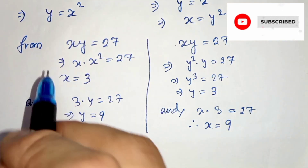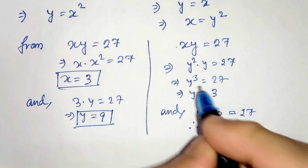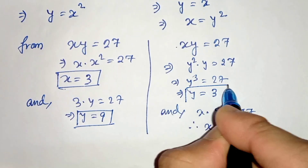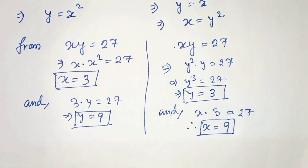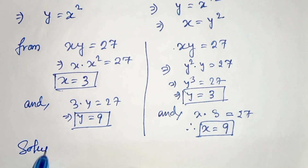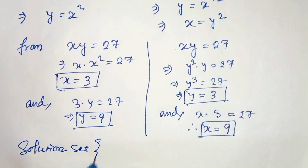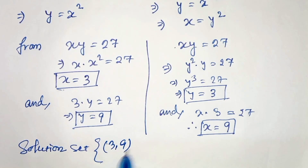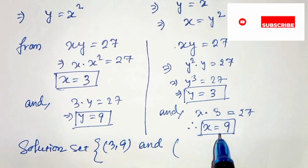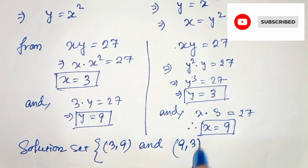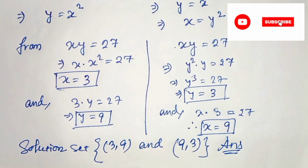So we get two pairs of values: x equals 3 with y equals 9, and x equals 9 with y equals 3. Therefore our solution set is (3, 9) and (9, 3). Thanks for watching.